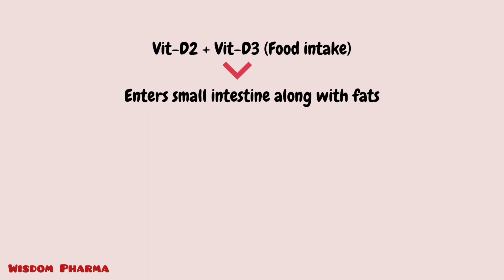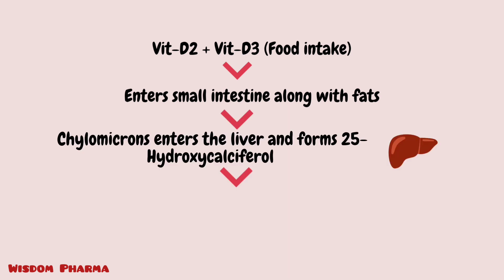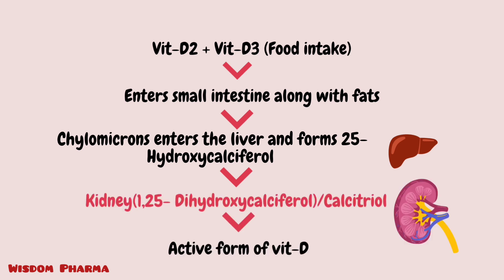When we consume vitamin D — whether D2 or D3 — it is metabolized in the body. The liver converts it to 25-hydroxycalciferol. Then in the kidneys, an enzyme converts the 25-hydroxycalciferol to 1,25-dihydroxycalciferol, which is called calcitriol. This calcitriol is the active form of vitamin D, and it produces the desired effects in the body.